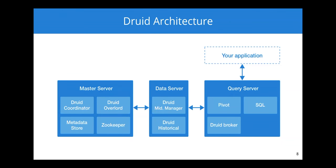Then we have the data server. The data server stores and ingests data. It runs two critical components: the Druid historical nodes, which are used for storage and processing of large amounts of immutable data, and the Druid middle managers, which are responsible for ingesting and processing data. The real-time data that Rob talked about is ingested and managed via the Druid middle managers.